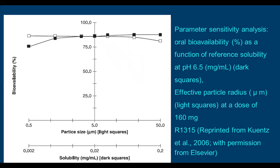From the graph: when particle size is smaller, bioavailability is more — near 100%. When particle size is bigger, bioavailability is less. Similarly, when solubility is lesser, bioavailability is less. When solubility is more, bioavailability is more. That is what the parametric sensitivity analysis graph demonstrates.